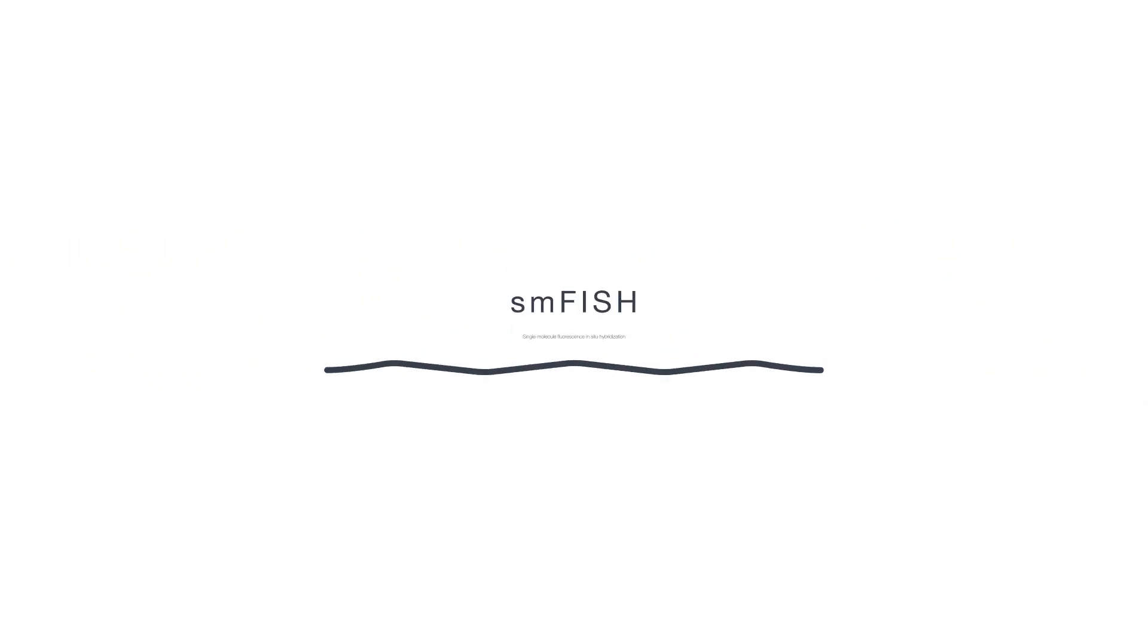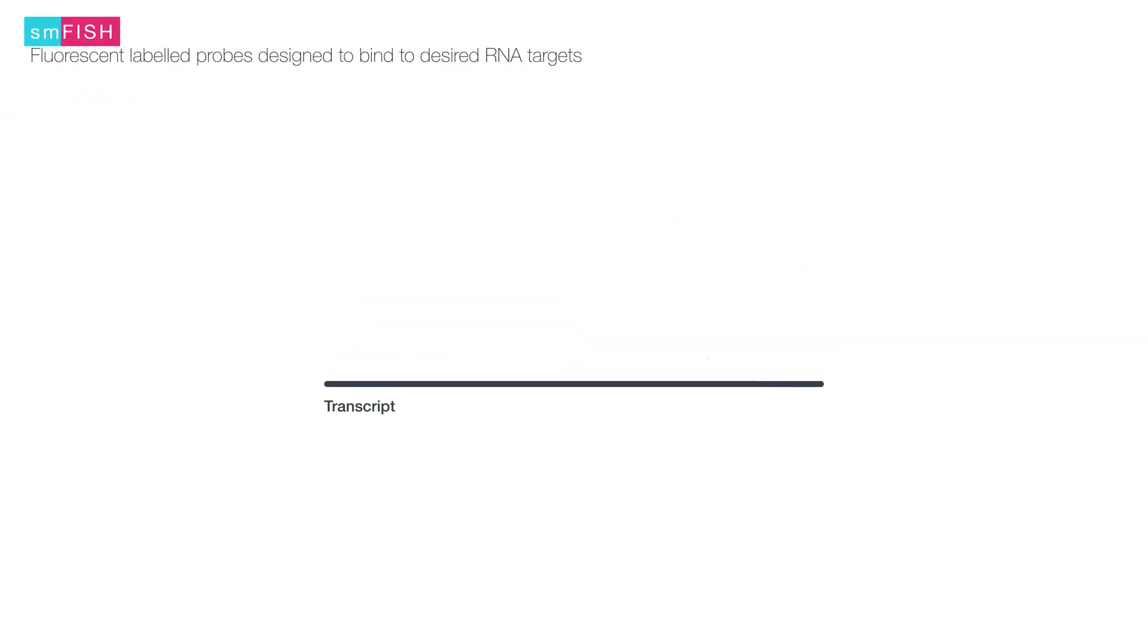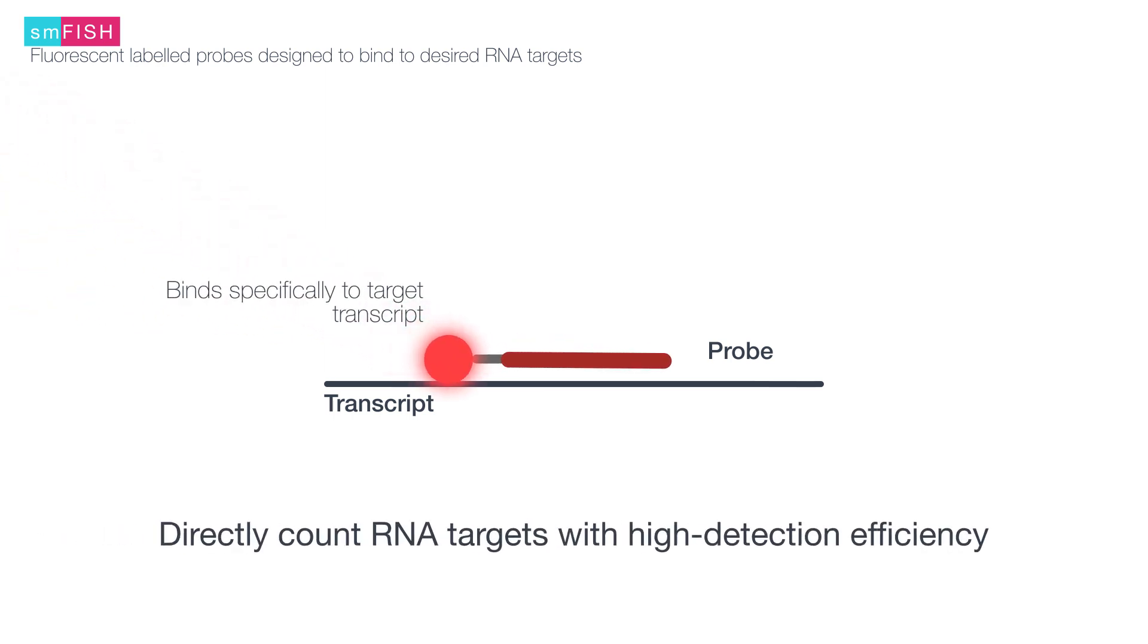MERFISH technology is based on single molecule FISH. With SMFISH, fluorescently labeled probes bind to the desired RNA targets with high specificity. By directly counting the number of fluorescent spots under a high-resolution microscope, we can directly quantify RNA expression, but the technique is able to only measure a few genes at a time.